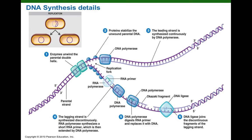So E. coli has another DNA polymerase called DNA polymerase 1. What DNA polymerase 1 does is it knocks off DNA polymerase 3, takes over DNA synthesis, removes the RNA primer by hydrolyzing it, and then replaces the RNA primer with DNA.